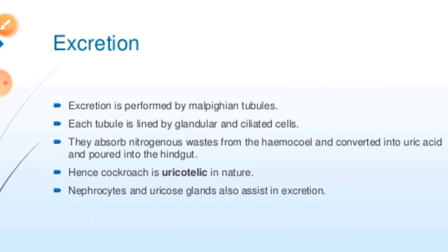First of all, you have to know what uricotelic means. Generally, animals can be classified on the basis of excretion into different categories: uricotelic, aminotelic, and ureotelic. Uricotelic are those organisms which always excrete their excretory product in the form of uric acid. Ureotelic organisms excrete in the form of urea, and aminotelic organisms excrete in the form of ammonia.